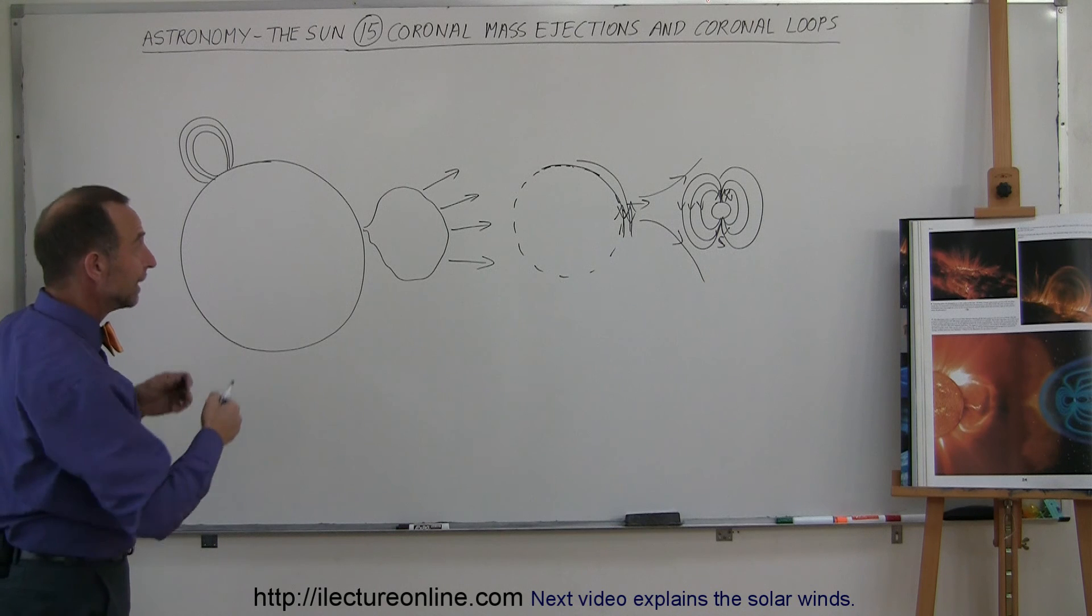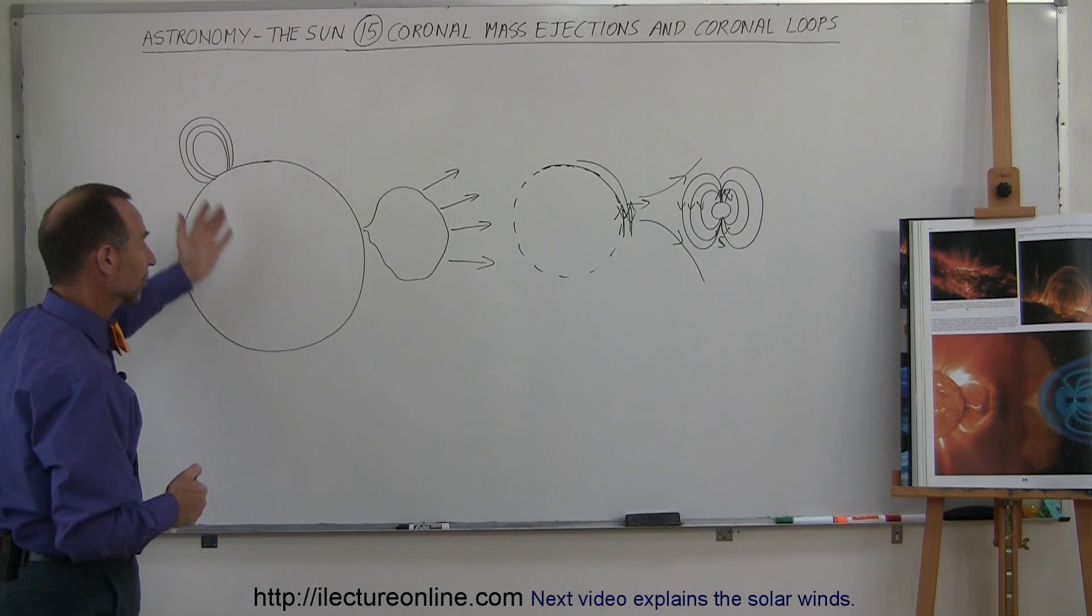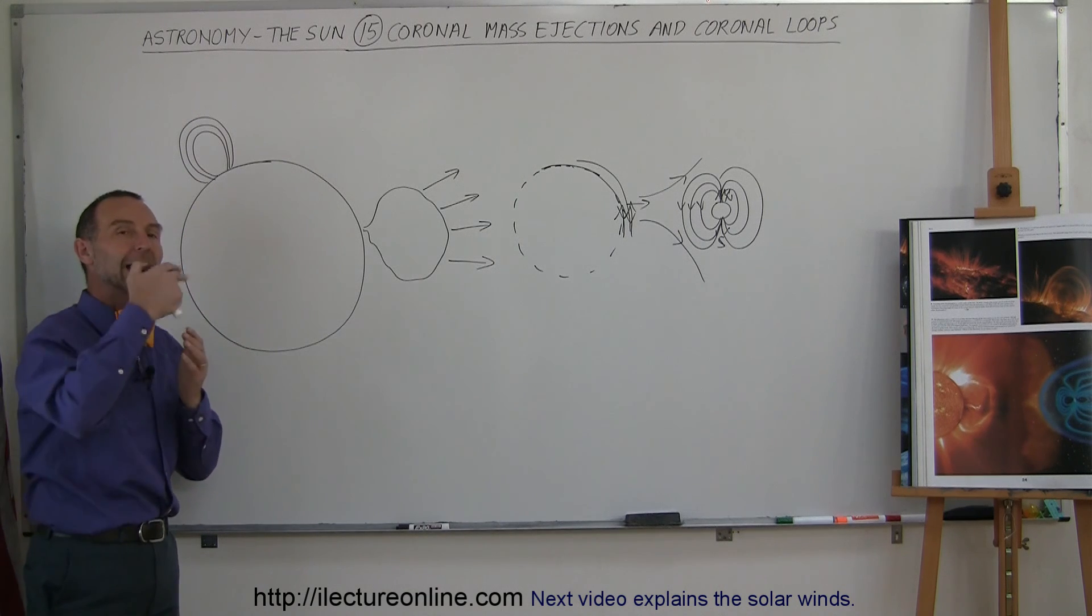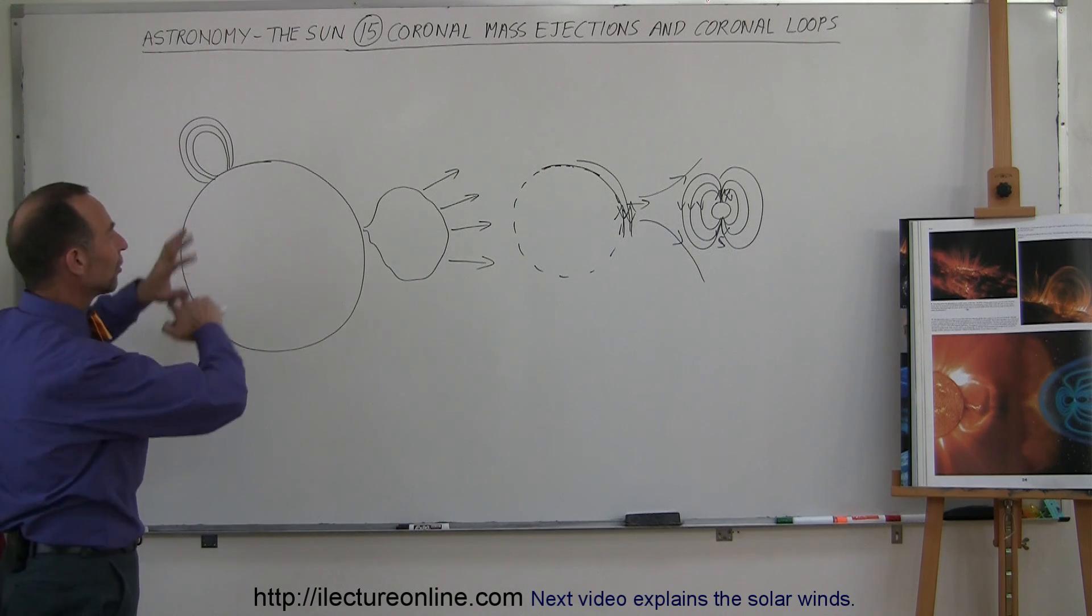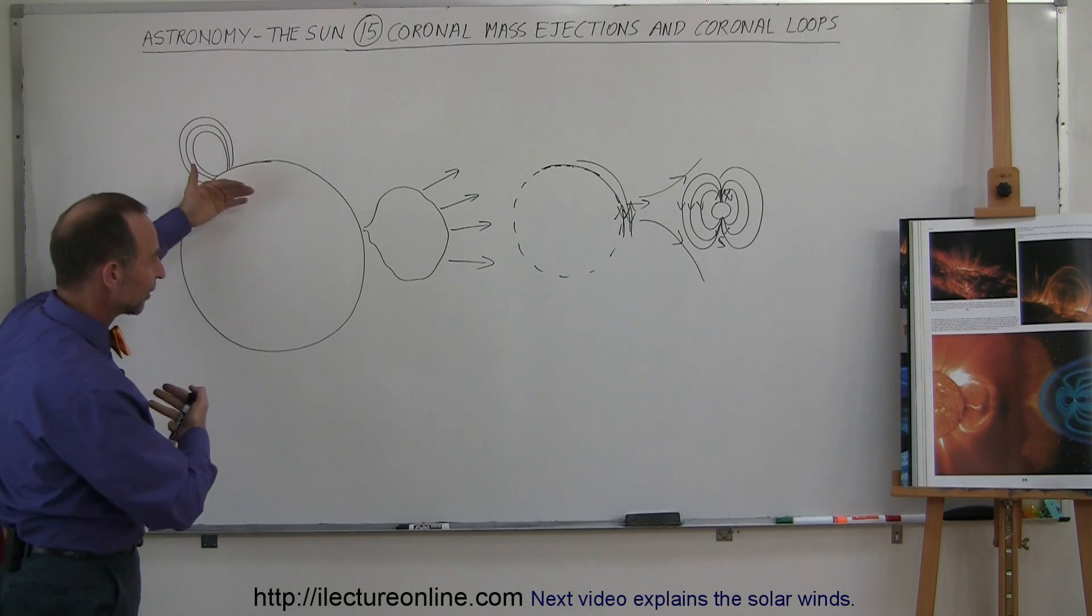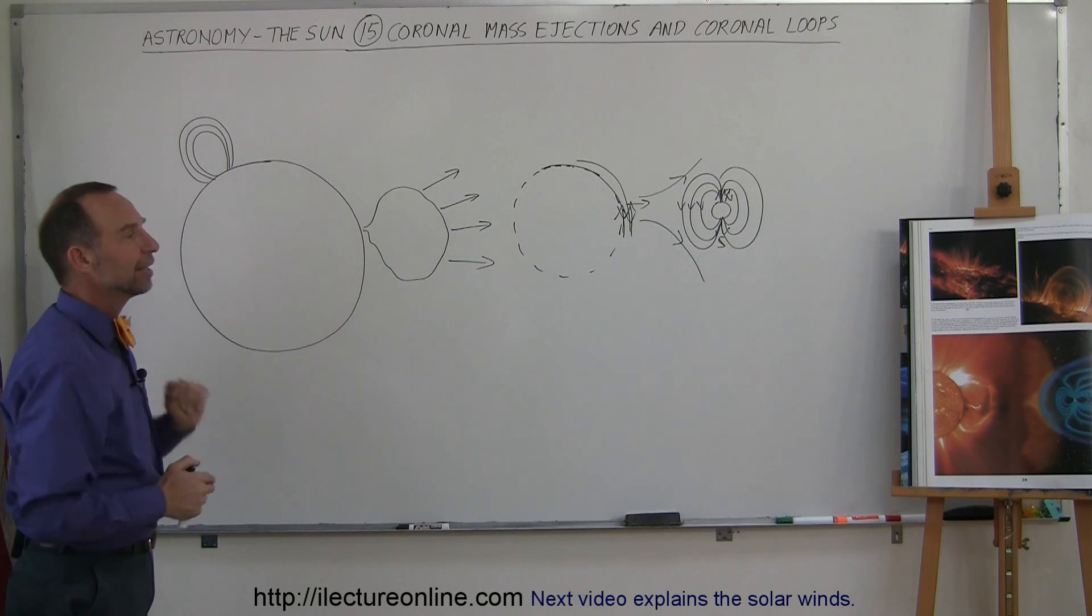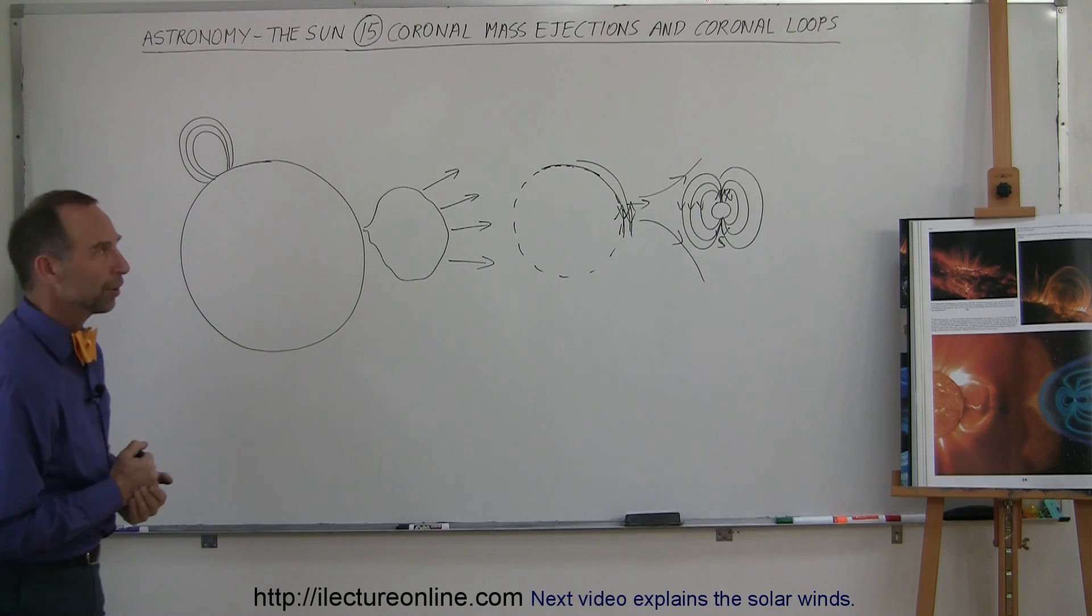Now this again happens during phases of the Sun where there's a lot of activity, where the magnetic field lines are going haywire around the Sun during the height of the activity, and then when all this settles back down, and the field lines fall back into place, and the magnetic fields reverse direction on the Sun, then the whole process starts over again, and then these events are much fewer and farther apart at that point.